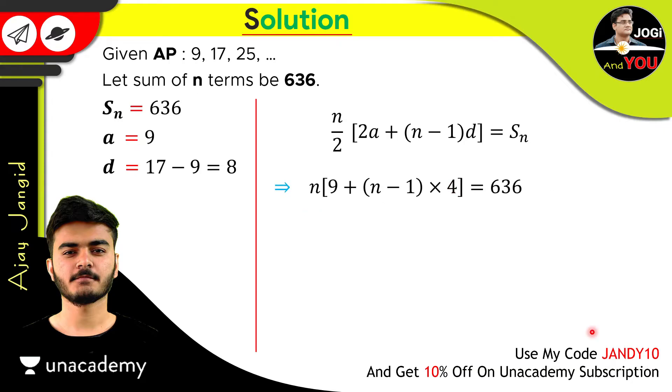Now, we will distribute this 4 in the bracket, in the whole bracket. And after distributing, we have 4n minus 4, and then 9 minus 4 is 5. And then just distribute this n into this bracket, which is 5n plus 4n square is equal to 636.